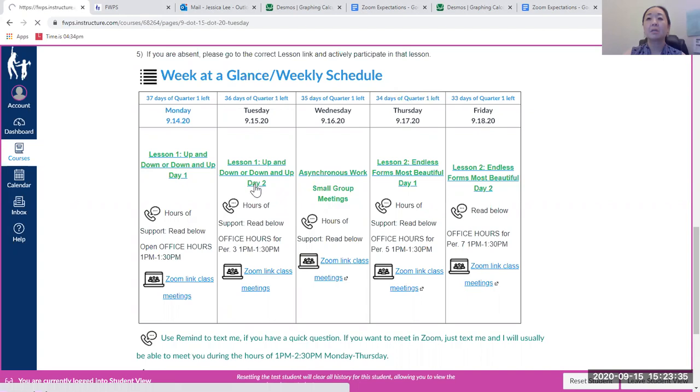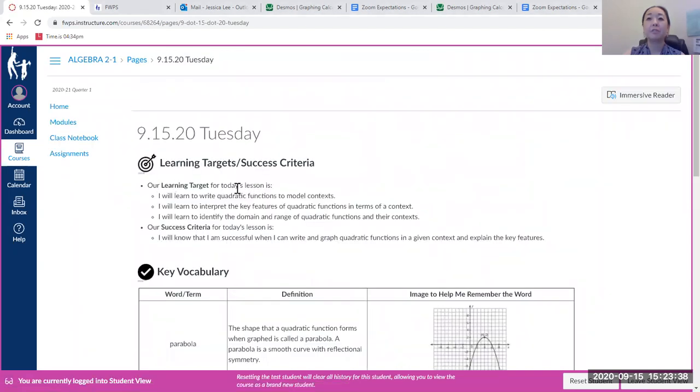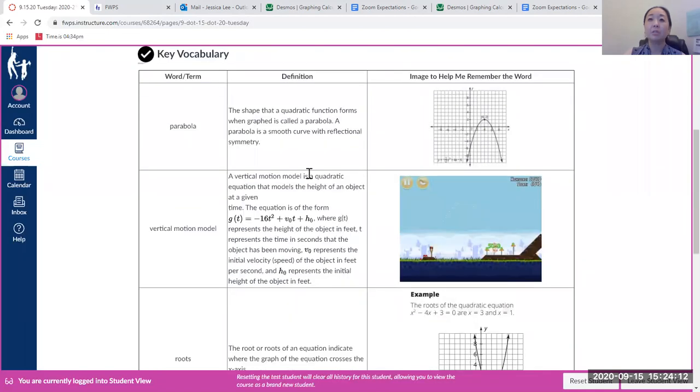If you click on this, our learning target for today is I will learn to write and continue writing quadratic functions to model context. I will learn to interpret key features of quadratic functions in terms of a context and I will learn to identify the domain and range of quadratic functions in their context. So again we're looking at domain and range, there's quite a few things we're going to be looking at today. And I will know that I am successful when I can write and graph quadratic functions in a given context and explain key features. So by the end of today you should know those key features. All right, again the key words here.